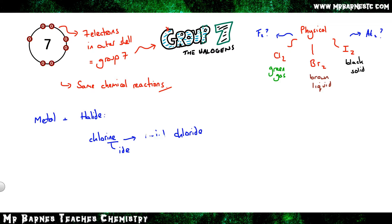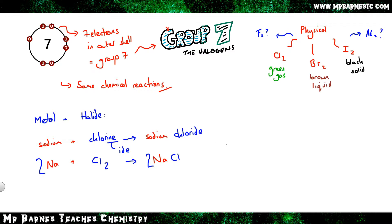For example, sodium reacted with chlorine gives sodium chloride. The balanced symbol equation is: 2Na + Cl₂ → 2NaCl. This works for any metal: lithium and chlorine makes lithium chloride, sodium and bromine makes sodium bromide. The trend continues regardless of what metal and what halide you combine.